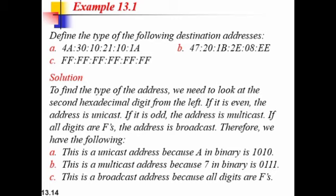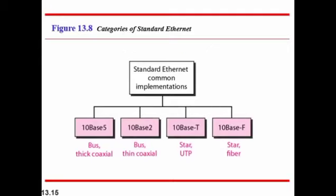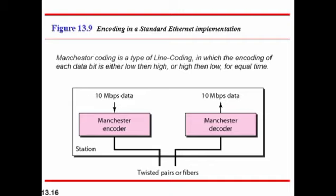The categories of Standard Ethernet: IEEE defined different standards for common implementations. These are 10Base5, 10Base2, 10BaseT, and 10BaseF. Manchester encoding is also used — it is a type of line coding where each data bit is encoded as either low-then-high or high-then-low for equal time, developed at Manchester University.